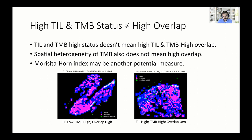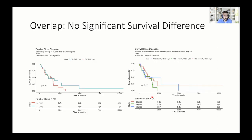We looked at survival differences using the Morisita-Horn Index and TIL prediction, and we see no difference in survival. We determined Morisita-Horn-high overlap patients using the median for the cohort as the threshold.